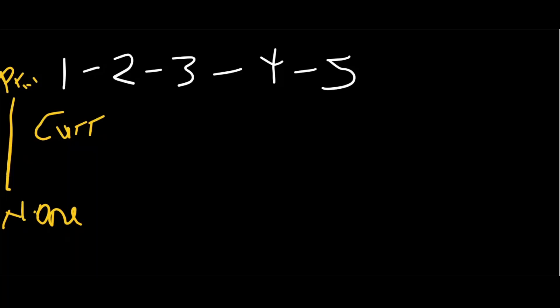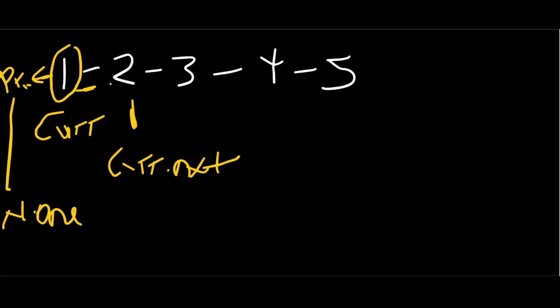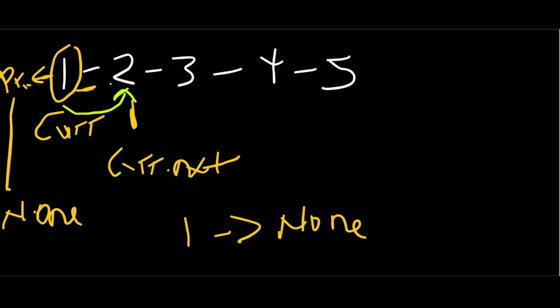Our current is the first element. Now we want to change this next pointer — we want to break off the link between the current and its next, which is current.next. We want to break off this chain and point it to the previous. So now one is pointing to none, which automatically becomes the tail. Then we move on to the next element in our linked list and update the previous pointer.